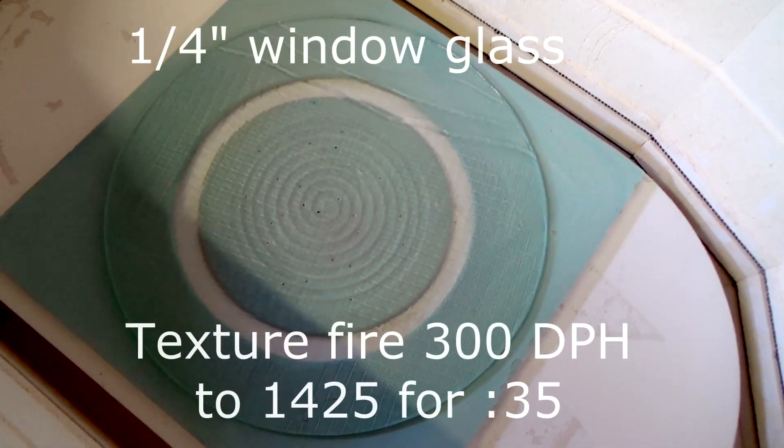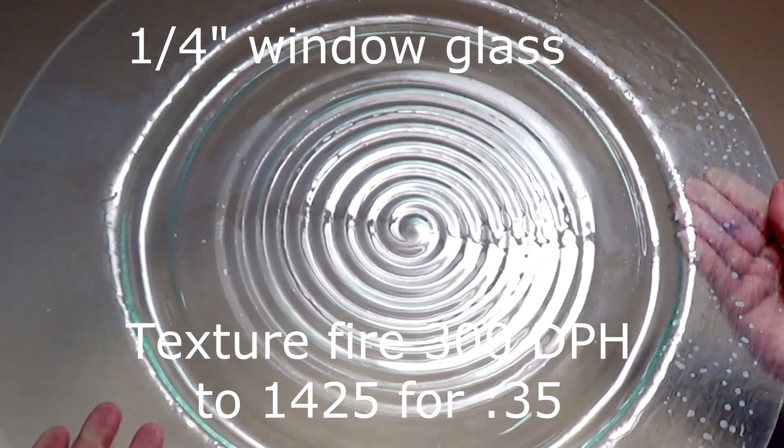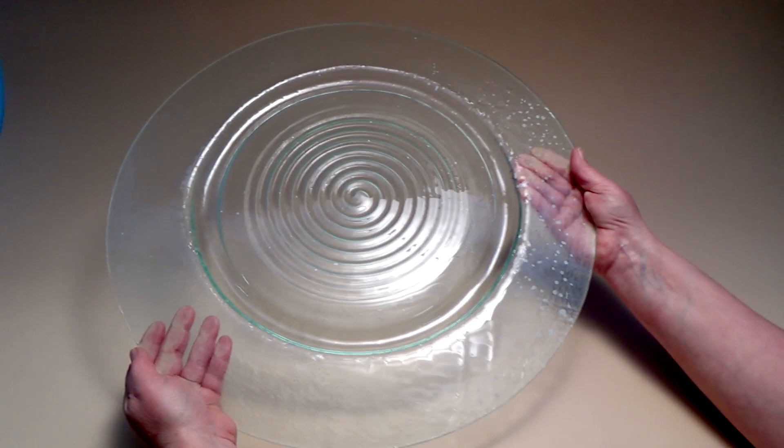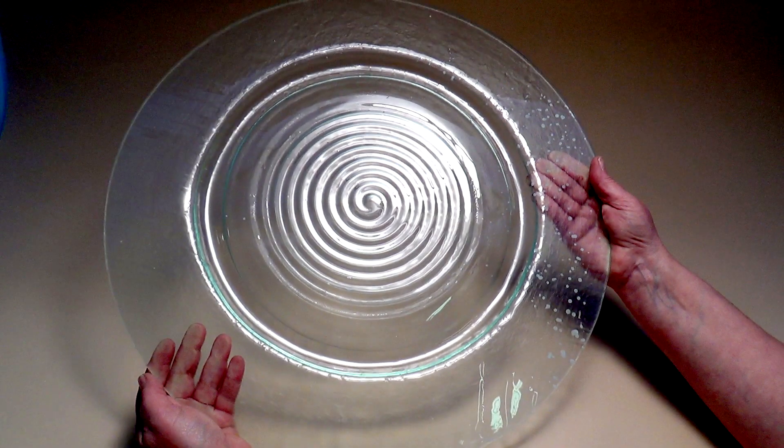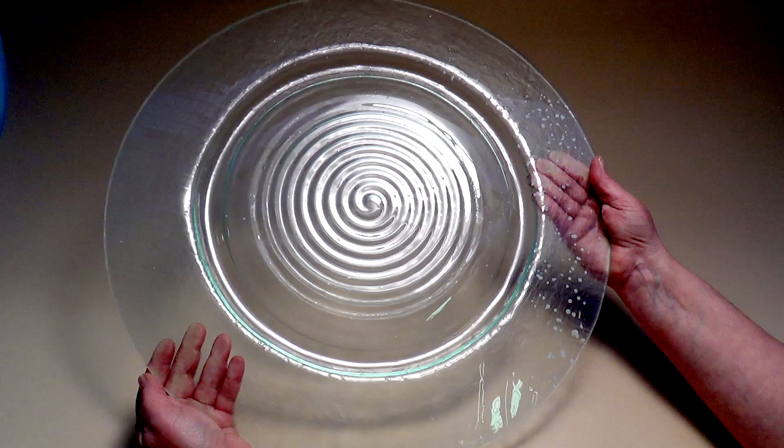I'm using an old piece of quarter-inch float glass from another project that already has a slight pattern. I position the glass and then fire using the texture schedule of 300 degrees per hour to 1425 Fahrenheit. I hold it there for 35 minutes. The glass fell over, but didn't pinch the edge of the ceramic plate, creating a solid, circular foot.